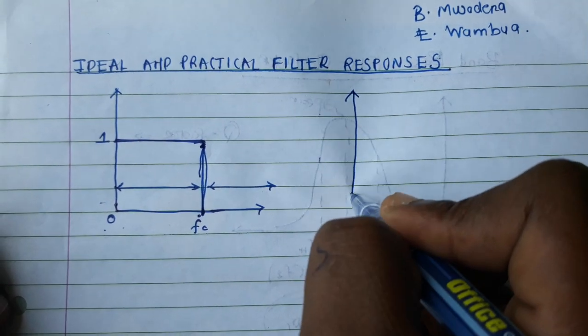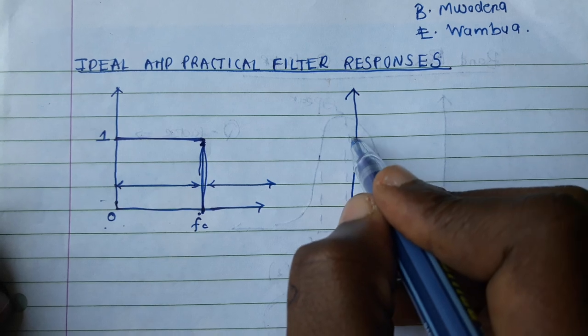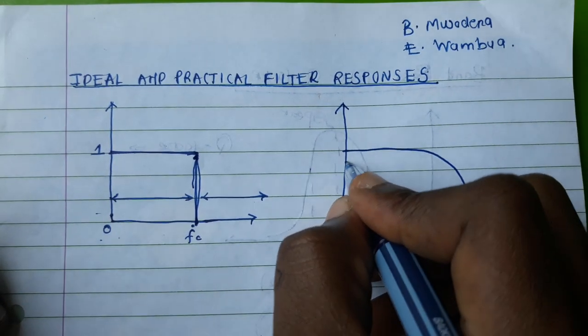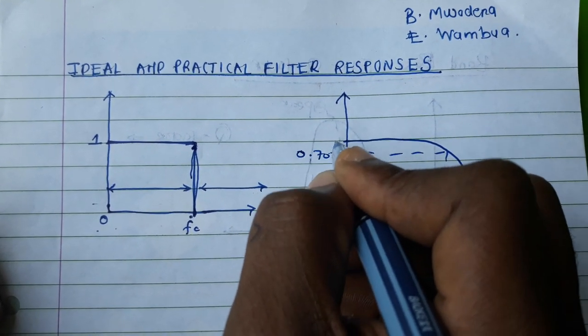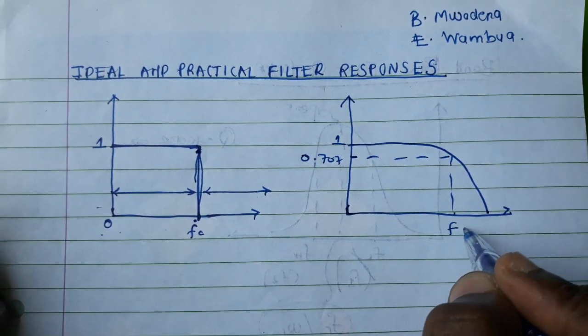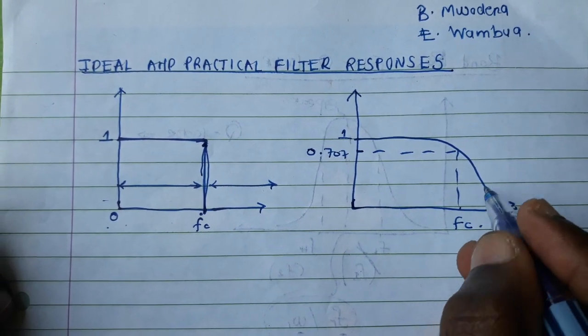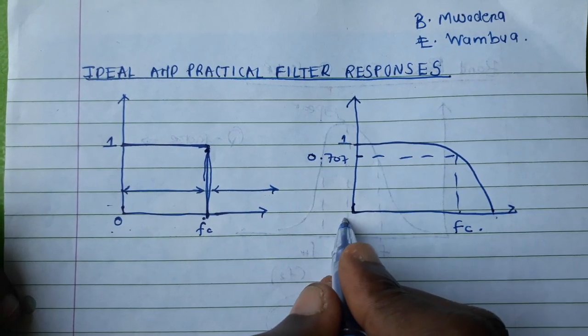Now, the practical characteristics of a low-pass filter is that way. You see this is the 0.707, this is 1, and this is the cutoff frequency. As you can see, from the cutoff frequency onwards, this change from 1 to 0 is not that abrupt.